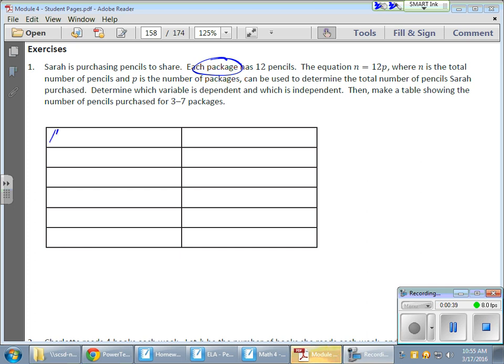So the number of packages I'm going to put over here, and the total number of pencils I'll put over here. They actually gave us the equation for this. They're saying n equals 12p where n is the total number of pencils. So here's my n, I'll put that in parentheses just to make it stand out a little bit. And p is the number of packages, I'll put that in parentheses to make that stand out a little bit.